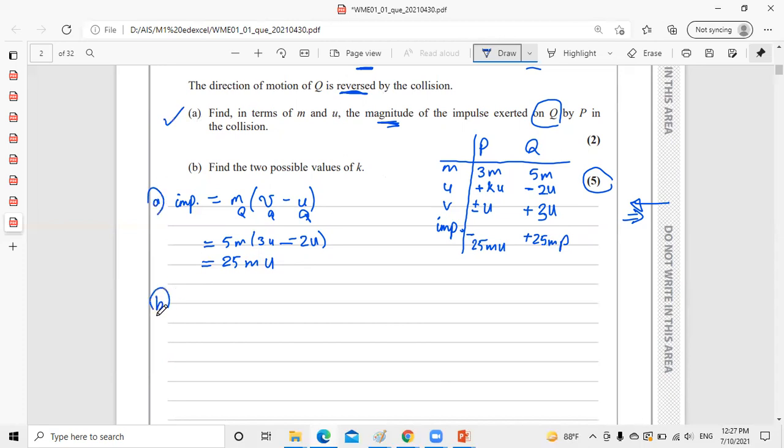Part B asks: find the two possible values of K. Because we didn't mention what happened to P, does it reverse its direction or not. It was moving to the right with an impulse to the left, so maybe it switches direction, maybe it remains the same. That's why we have two possible values of K. We can use the impulse formula or conservation of momentum for both particles.